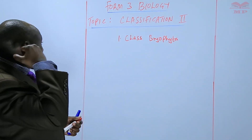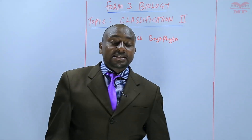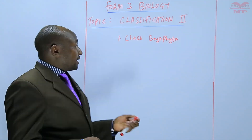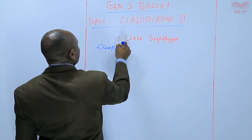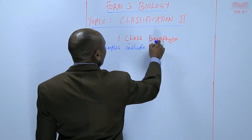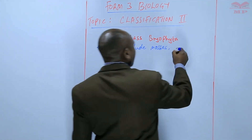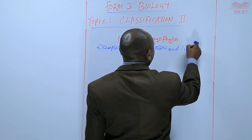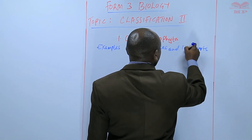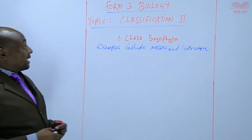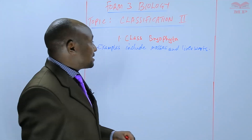In Class Bryophyta is where we earlier said we have the least advanced plants in Kingdom Plantae, and examples include mosses, also known as the moss plant, and the liverworts. These are very small plants that are just a few centimeters in size.